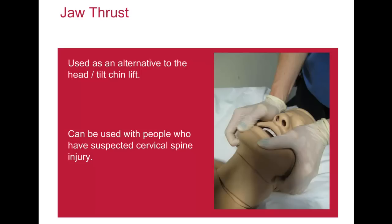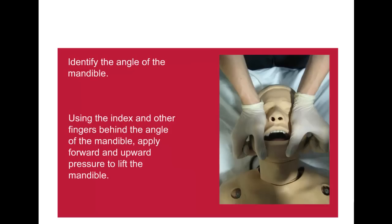The jaw thrust is an alternative manoeuvre to the head tilt chin lift. Using this technique, the mandible is brought forward, relieving obstruction caused by the soft palate and epiglottis. To perform the jaw thrust, the rescuer places their index to little fingers behind the angle of the mandible, then applies upward pressure to move the jaw upwards and forwards. Using the thumbs, the mouth is opened slightly by downward displacement of the chin. The jaw thrust is the preferred option for a victim with suspected or actual cervical spine fracture.